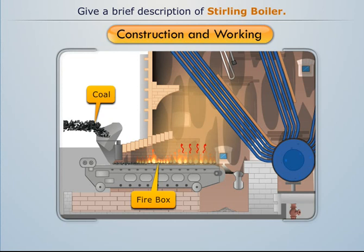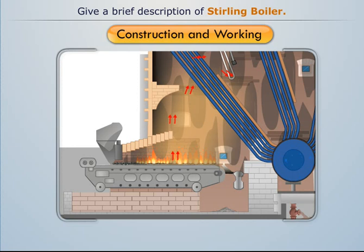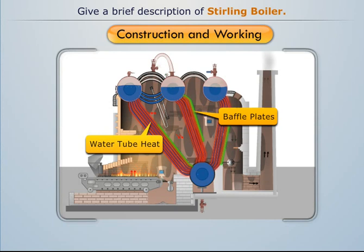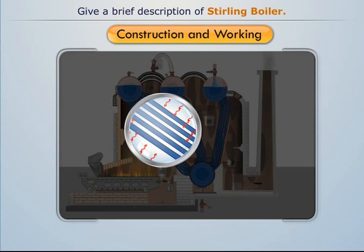These flue gases are deflected by the brick arch to move upward between the water tubes, where baffle plates are provided to guide the movement of flue gases and ensure proper heating of the water tubes. On absorbing heat, the water flowing in the bent water tubes gets converted into steam.